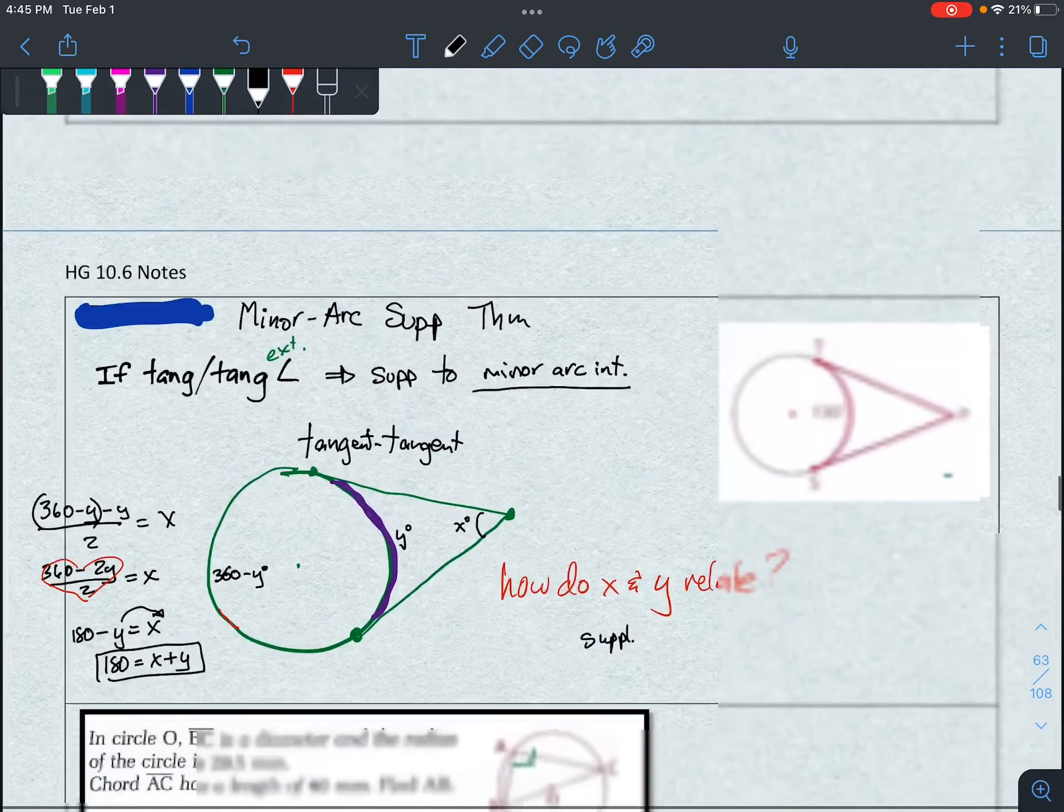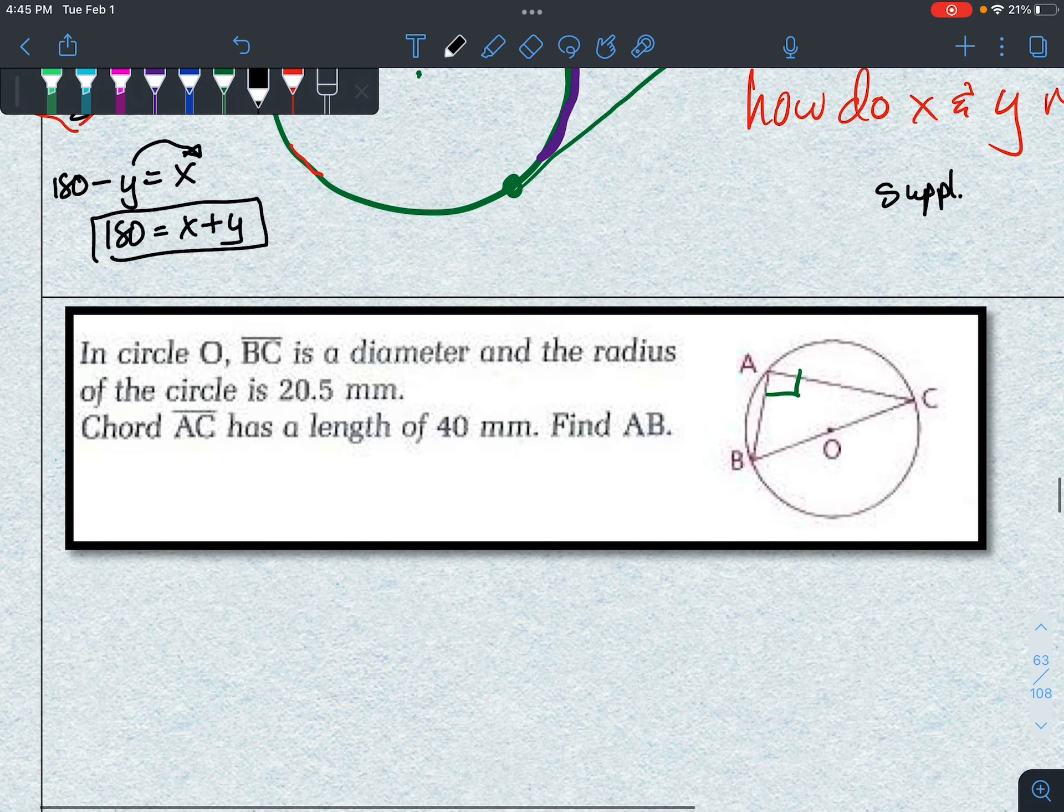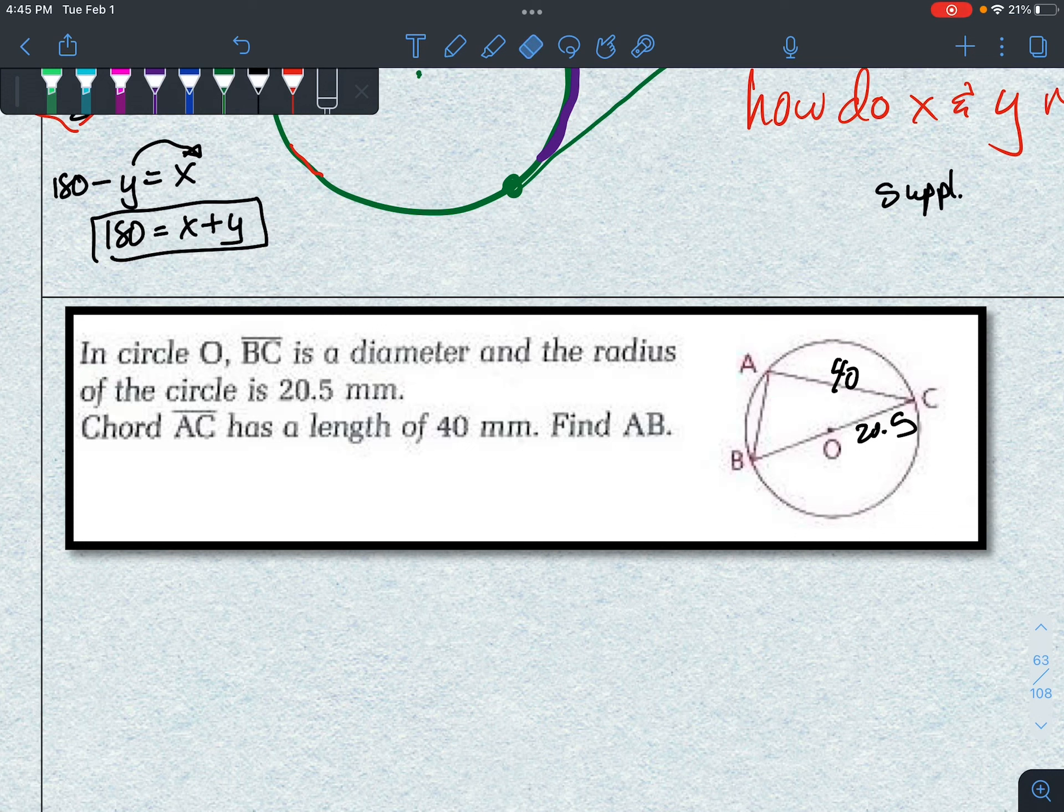Alright, I think that's it. So you're going to get problems kind of like this and they're going to say, oh look at that, you have a chord AC is 40, and we know the radius is 20.5. Now what is this side over here?